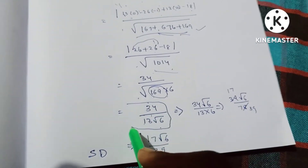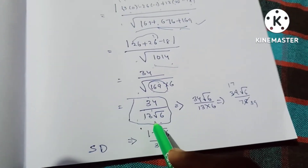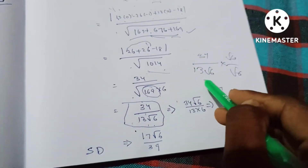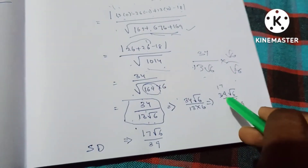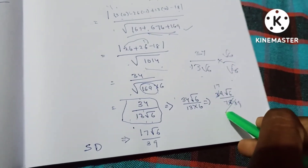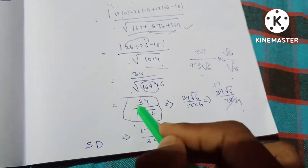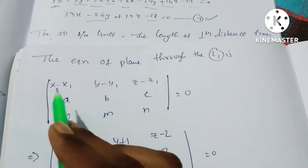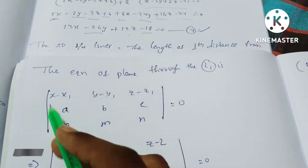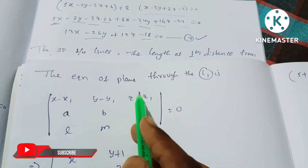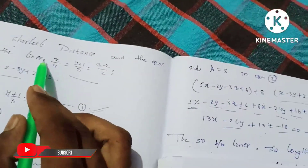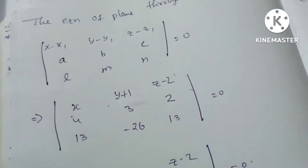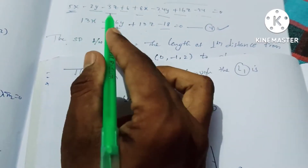This gives the shortest distance value. Rationalizing: 34/(13√6) = 34√6/78 = 17√6/38. The SD line equation uses the formula with Line 1 direction ratios: x/4 = (y+1)/3 = (z-2)/2, giving l, m, n values of 4, 3, 2.